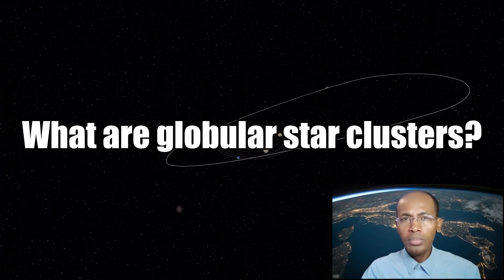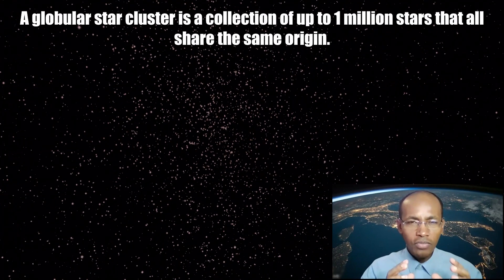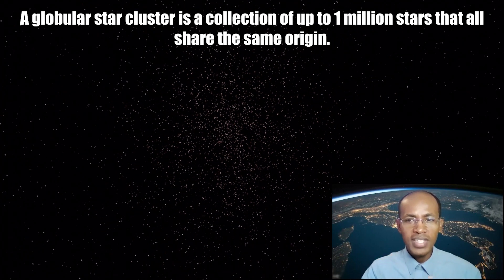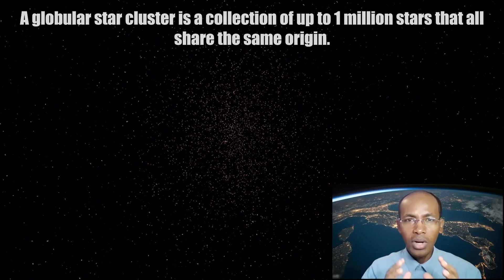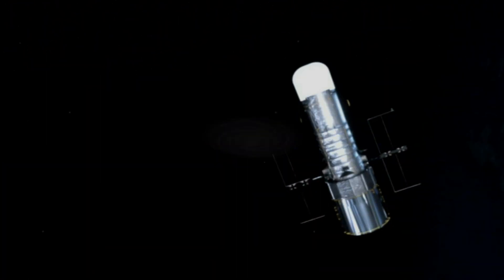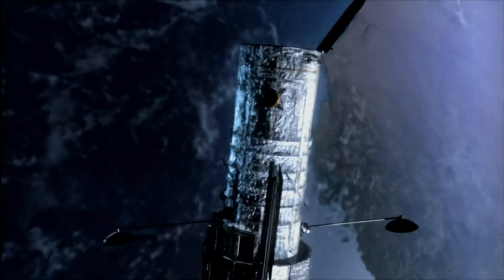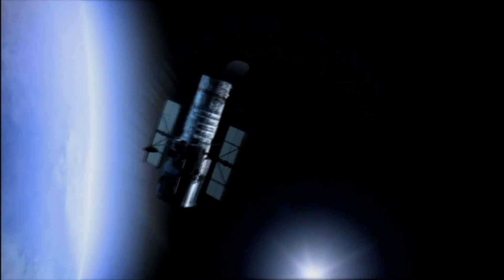Next question, what are globular star clusters? A globular star cluster is a collection of up to 1 million stars that all share the same origin. The globular clusters associated with our Milky Way galaxy are typically composed of old stars more than 10 billion years old. And the Hubble Space Telescope pictures of other galaxies sometimes reveal globular-like clusters containing young stars that are less than 50 million years old.